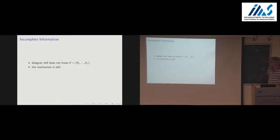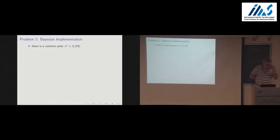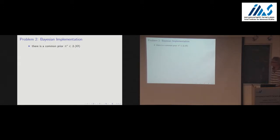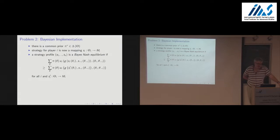The designer still doesn't know the type profile. The mechanism still consists of a set of messages and a game form. For Bayesian implementation, the standard next thing is to introduce a common prior over the profile of types. A strategy in this incomplete information game is a mapping from types to messages. The solution concept is Nash equilibrium of the incomplete information game — Bayes-Nash equilibrium.